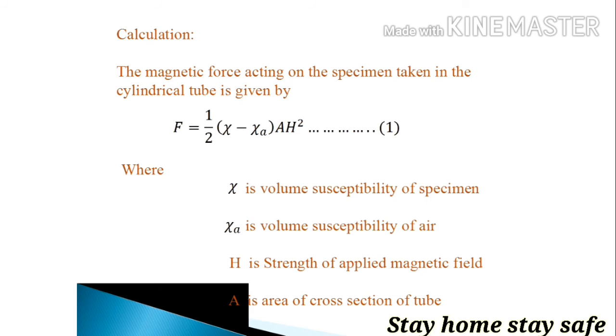For calculation, the magnetic force acting on the specimen taken in the cylindrical tube due to applied magnetic field H is given by F equals one-half times (χ minus χ_A) times AH squared.